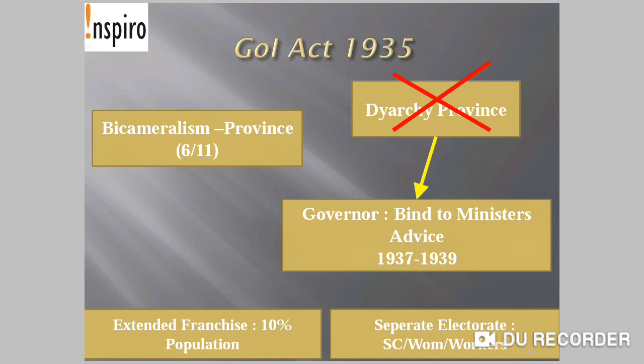The Diarchy of the provinces was abolished, making the Governor more accountable and bound by ministers' advice. However, this provision — that the Governor must function as per the minister's decisions — continued only from 1937 to 1939, after which it was abolished and the Governor got more freedom. The franchise was extended: around 10% of the population now came under voting power. The separate electorate was further extended under Government of India Act 1935 to scheduled caste people, women, and laborers or workers.